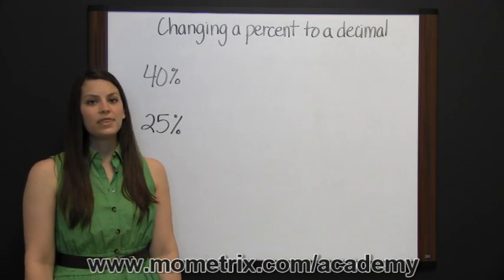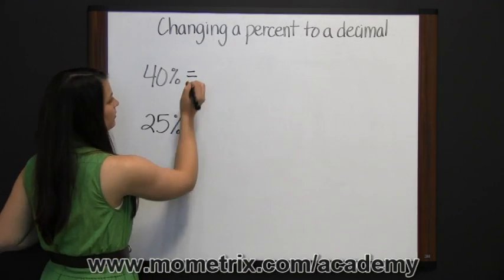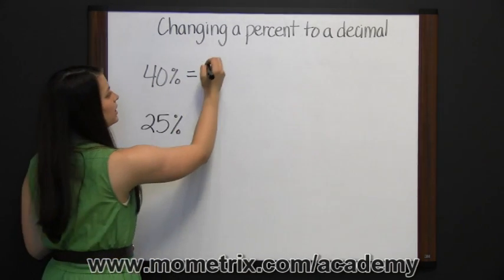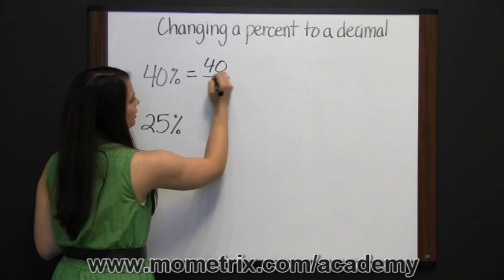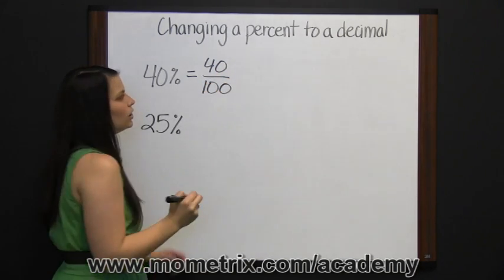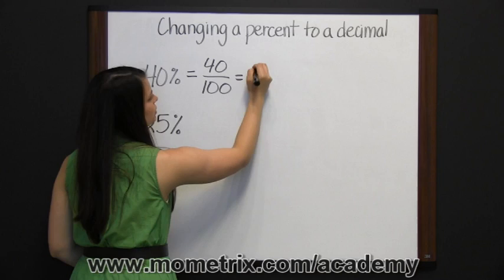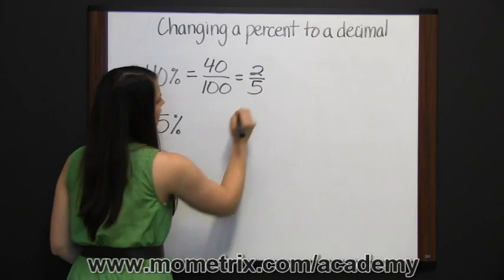We'll use that method on forty percent. So forty percent as a fraction is forty one hundredths, which we would then simplify to two-fifths.